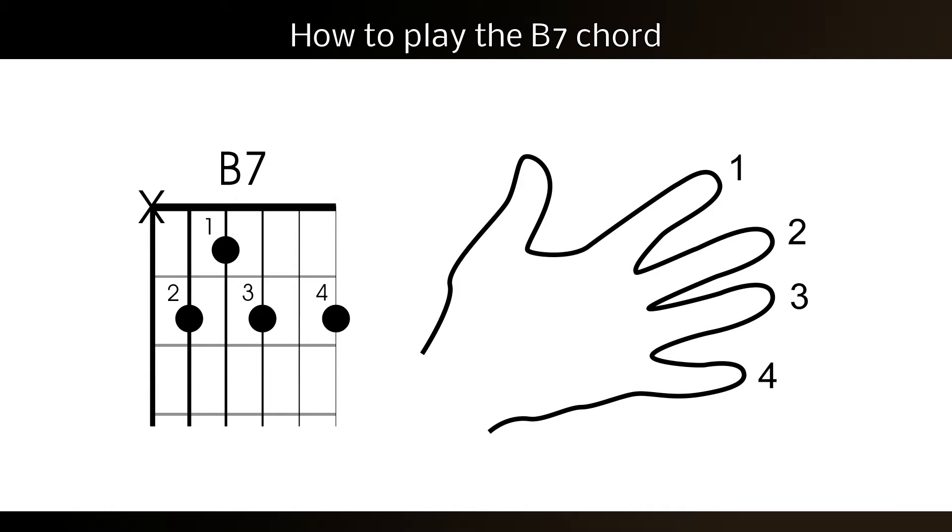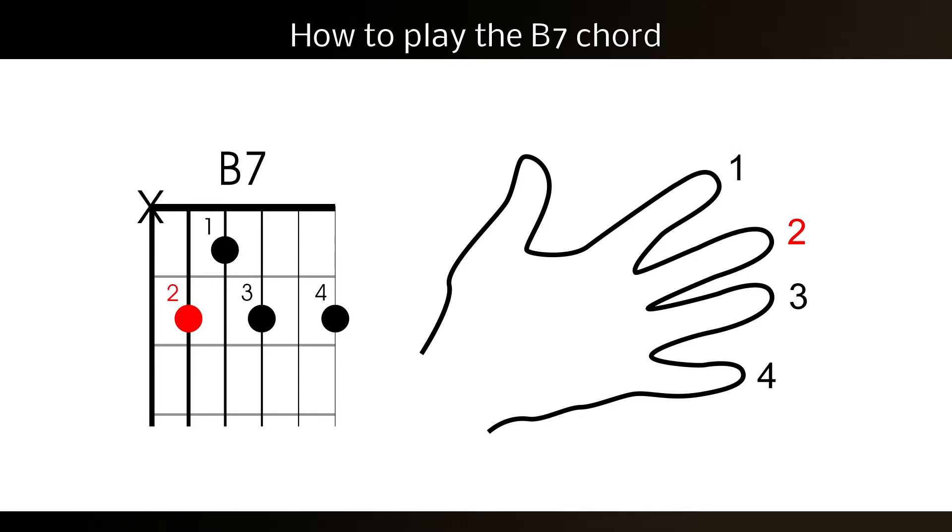Here's how to play a B7th chord. Firstly, press the first finger in the first fret of the D string. Then, place the second finger in the second fret of the A string.